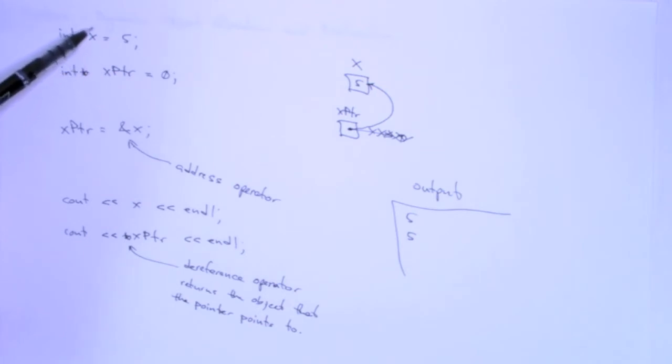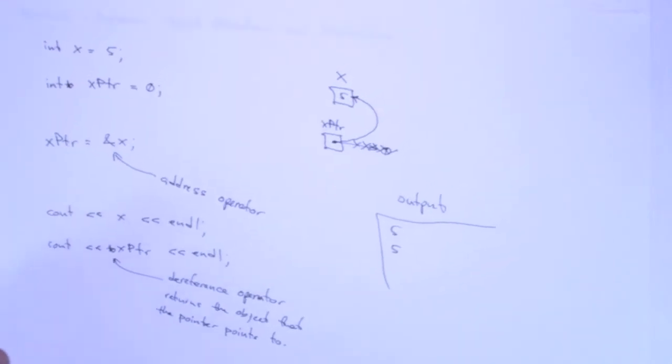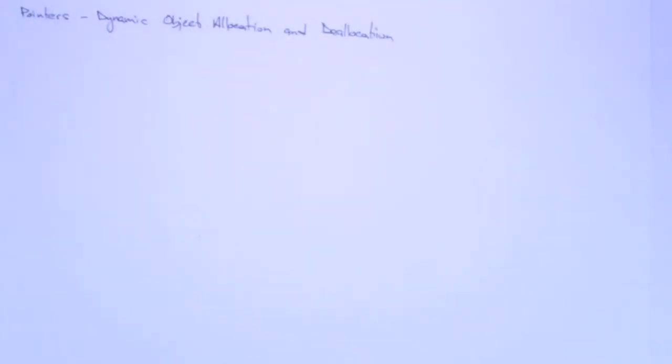But what I want to do is I want to at least get rid of x and then I can use x pointer. And the way that I'm going to do that is instead of statically creating an integer x and setting its value to 5, I'm going to do that dynamically.